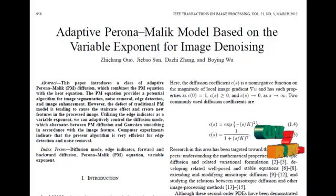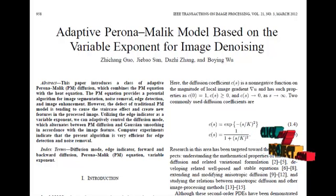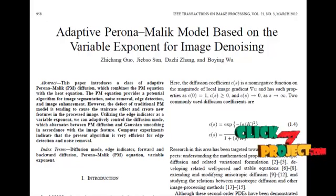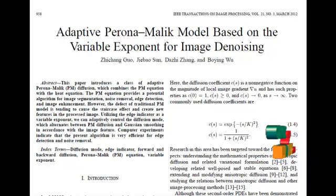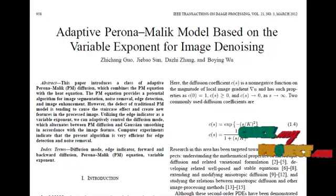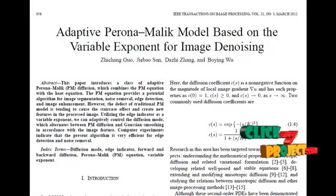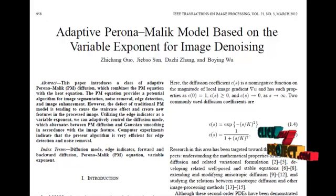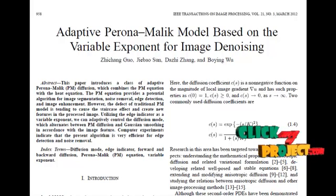The new method acts as a heat equation to remove noise. In the regions nearby boundaries, the new method acts as a PM equation to preserve the edges. Because of the controllability of the diffusion mode, the new method can overcome the difficulty of the original Paranormalic equation and sufficiently preserve small features.